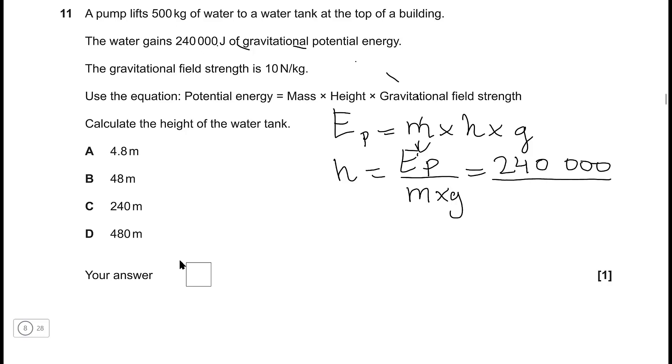Then we're going to be dividing that by the mass, which is 500, and then we're also going to multiply that by the gravitational field strength, which is just 10. And if we calculate this out, we get 48 meters for the height. Therefore, the correct answer is B.